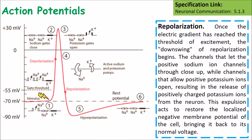When the outer membrane is repolarized, it follows the following path. Once the electrical gradient has reached the threshold of excitation, the downswing of repolarization begins. The channels that let positive sodium ions in close, while channels that allow positive potassium ions out open, resulting in the release of positively charged potassium ions from the neuron. This expulsion acts to restore the localized negative membrane potential of the cell, bringing it back to its normal voltage. The graph on the left-hand side of the page summarizes this process, and it is worth noting all six stages.